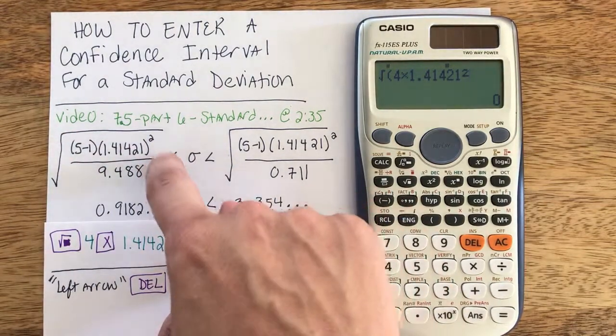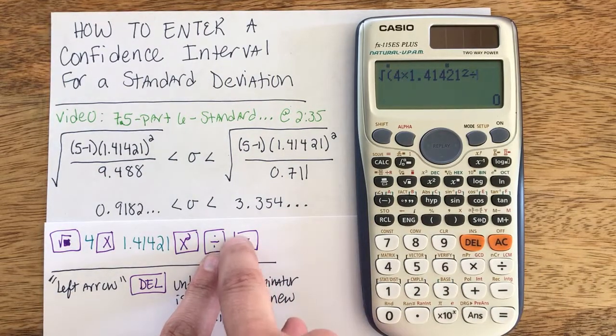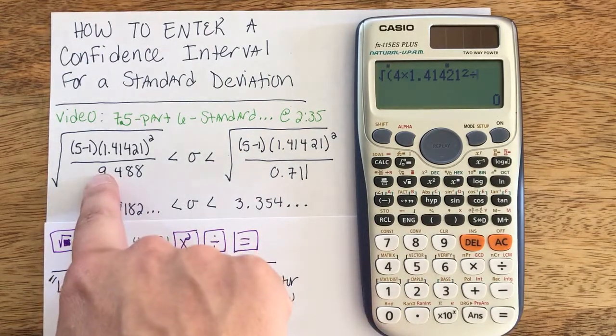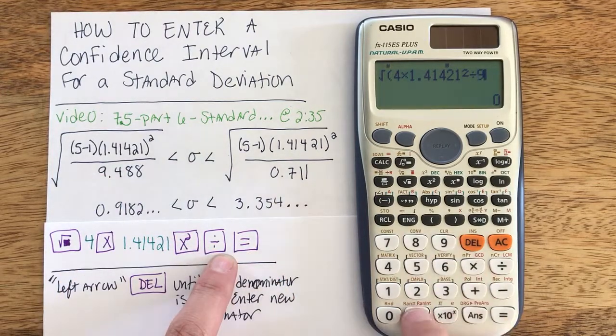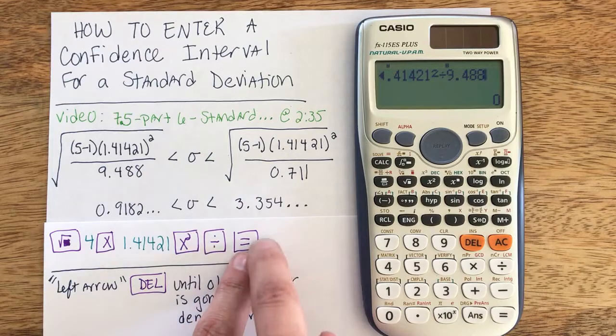And now that I have my numerator typed in I'm ready to divide by the denominator. Whoops, I didn't write the denominator on my formula page, but in this problem the denominator was 9.488.